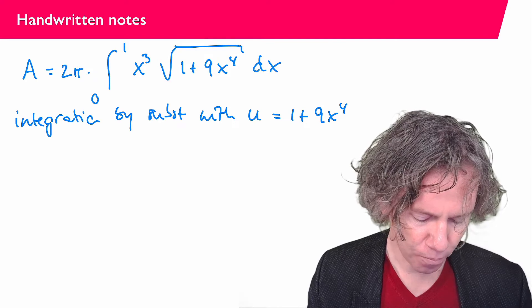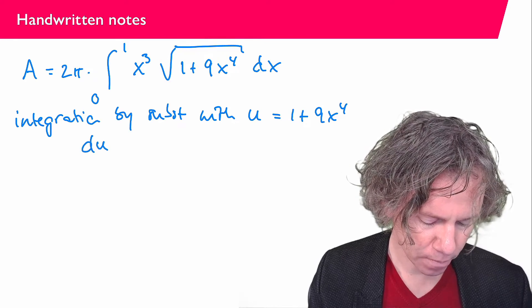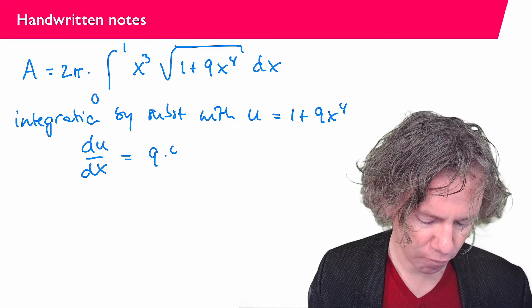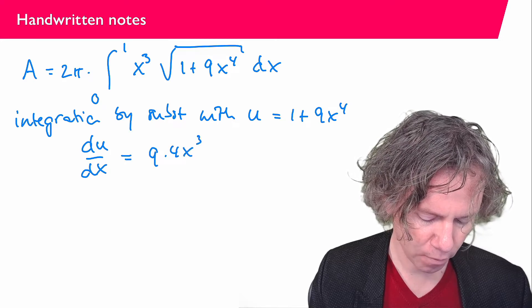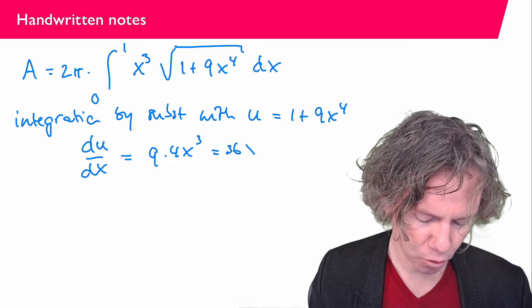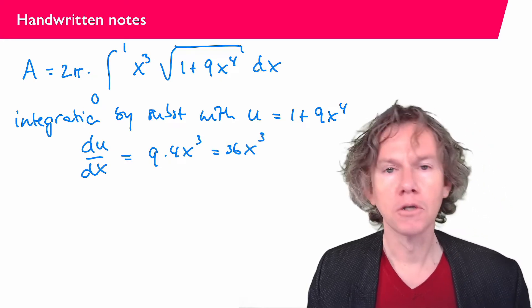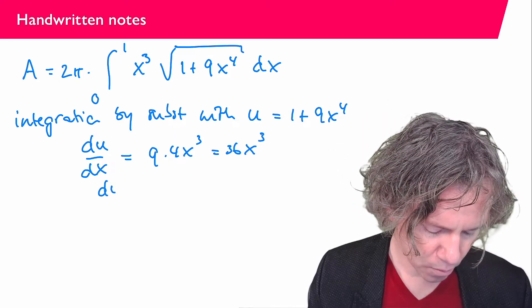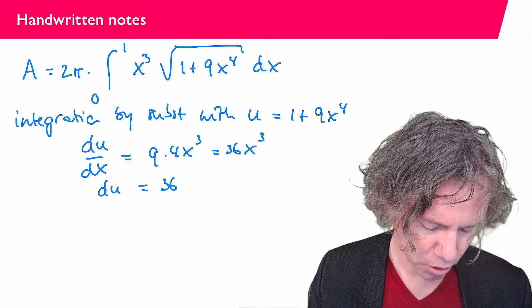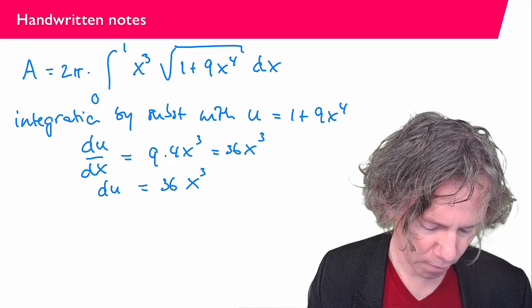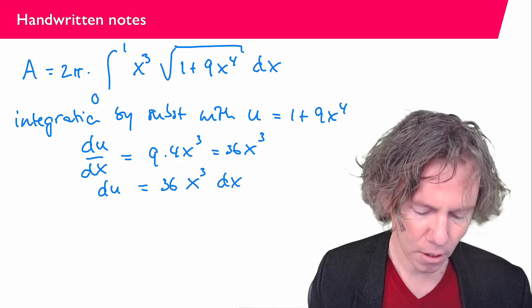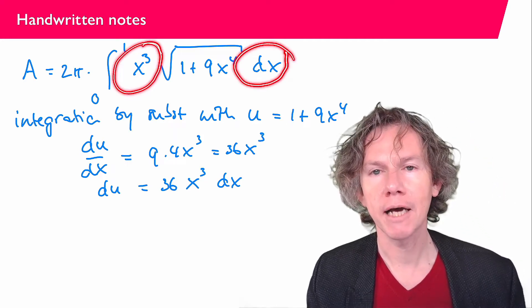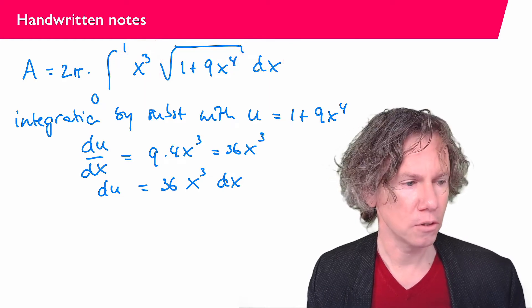And if you compute du/dx, so just differentiating, you see that we get 9 times 4x to the power 3, which is 36x³. So apparently if we want to go from dx to du, then we have that du equals 36x³ dx. And if you look back in the integral, then you see that we have an x³ dx in there. So that readily leads us to a du.